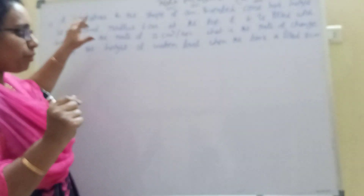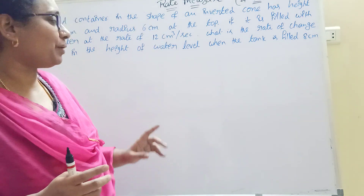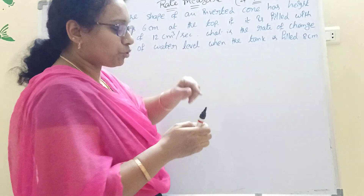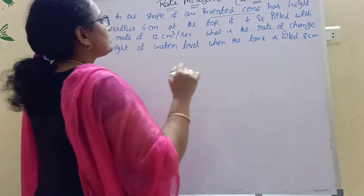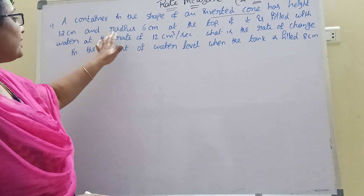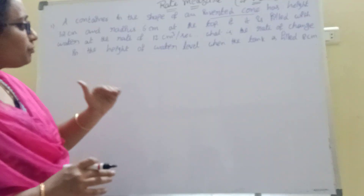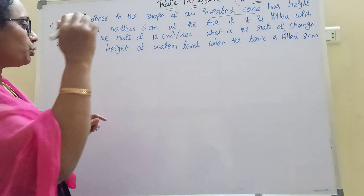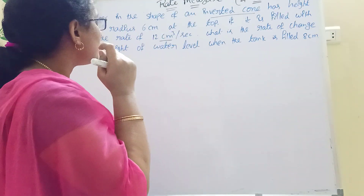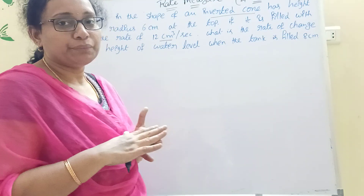Rate of measure problem. Water is contained in the shape of an inverted cone. The inverted cone has height equal to 12 cm and radius 6 cm at the top. It is filled with water at the rate of 12 cubic centimeters per second. What is the rate of change in the height of the water level when the tank is filled with 8 cm?